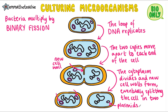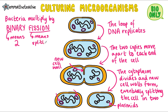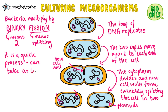You can remember the name binary fission by thinking of it like this: bi means two, like bicycle has two wheels, and fission means splitting. You may have learned about this in physics when looking at nuclear fission. So putting the two together, binary fission means splitting in two.